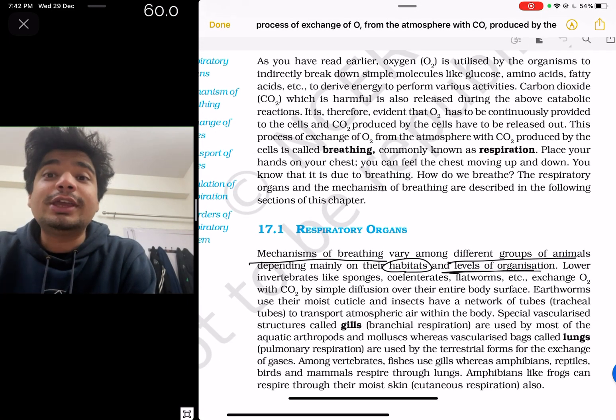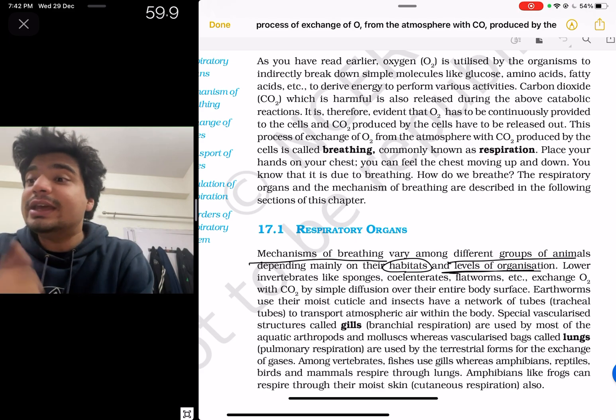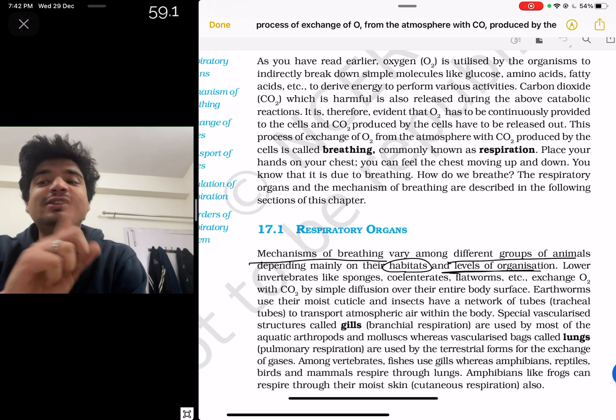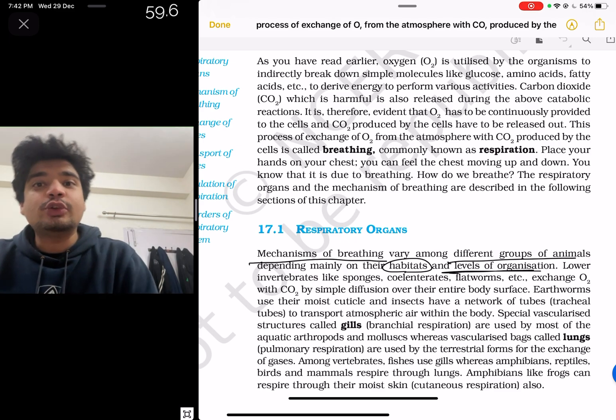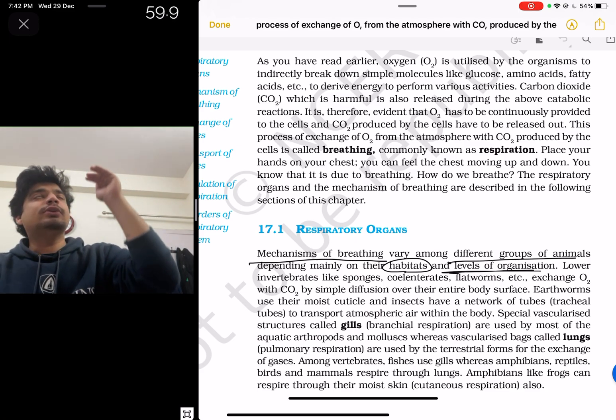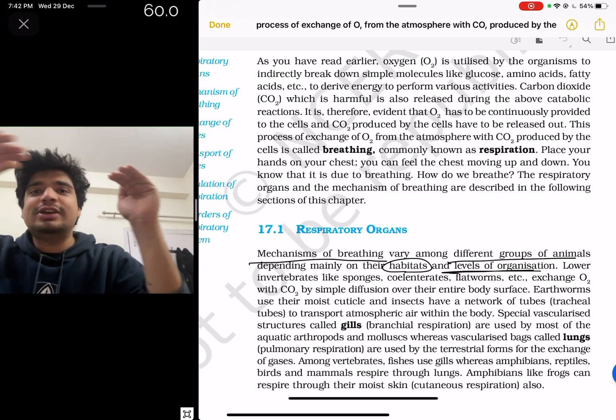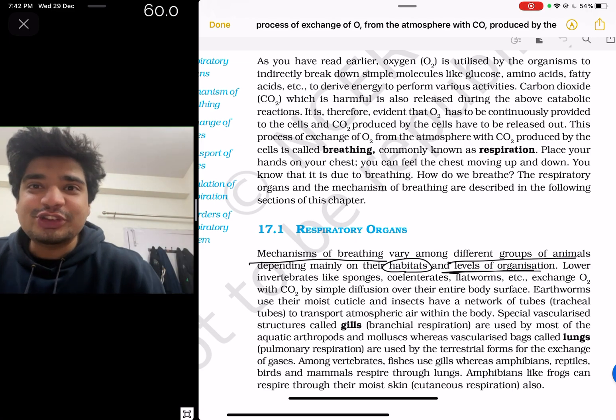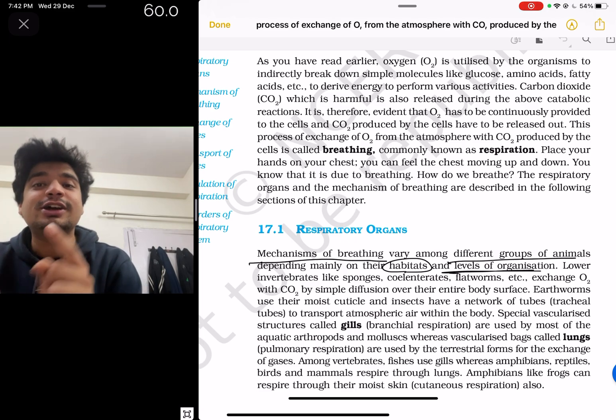Then, earthworms use their moist cuticles. Insects have a network of tubes called tracheal tubes to transfer this atmospheric air within the body. So now we can have a simple mix and match question. This way they can ask you: sponges - entire body, tracheal tubes - insects. They can ask you earthworm - cuticle. It will become a mix and match question. This is how you read NCERT. This is how you frame questions from NCERT.